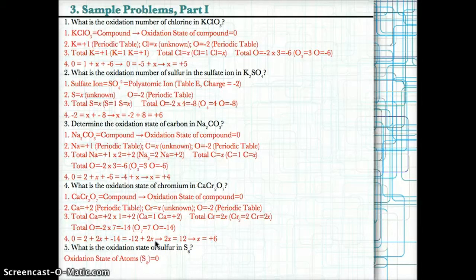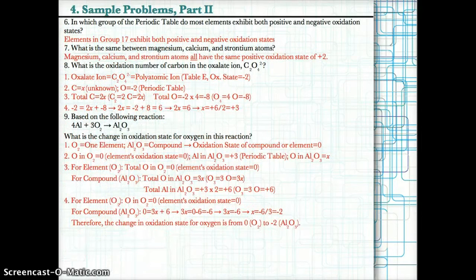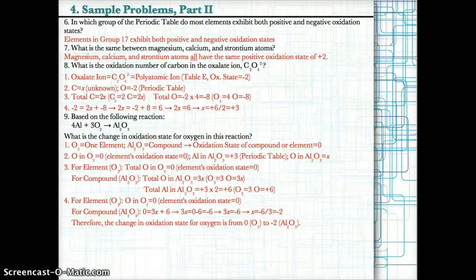Number five: find the oxidation state of sulfur in S8. Since S8 is a free element — S is bonded only to atoms of itself — its oxidation state is zero. Number six: in which group of the periodic table do most elements exhibit both positive and negative oxidation states? Elements in group 17 exhibit both positive and negative oxidation states. Number seven: magnesium, calcium, and strontium all have the same oxidation state of +2, if you look them up on the periodic table.